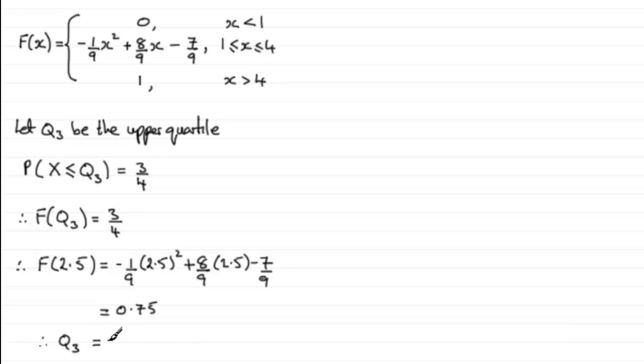So that's the value that we wanted, so therefore Q3, the upper quartile, must have been 2.5. Okay, so that's certainly a quick way of doing that part.